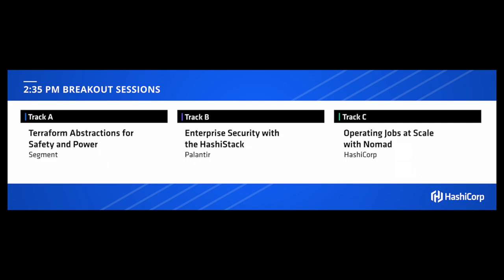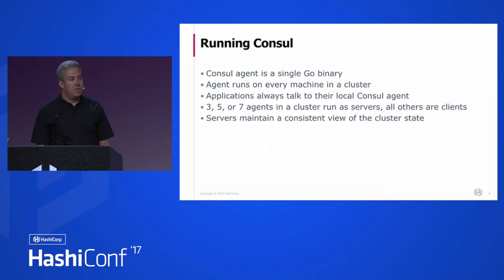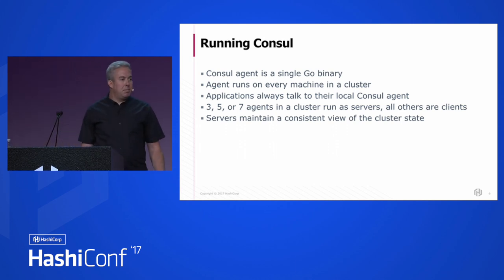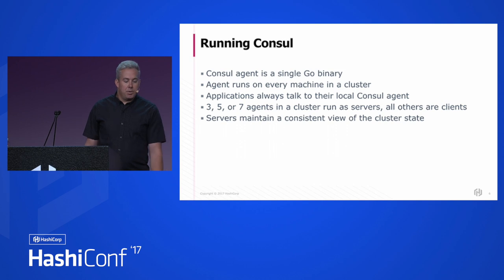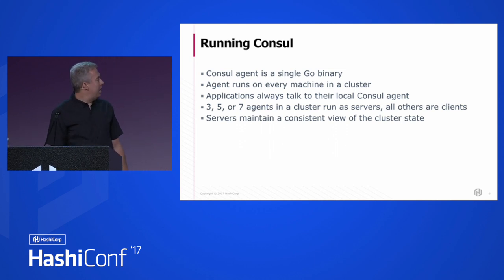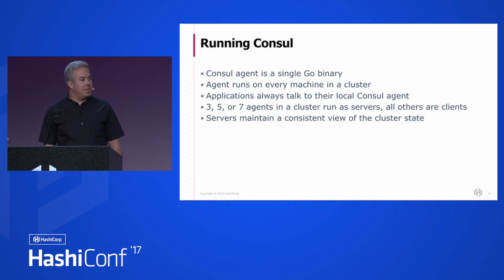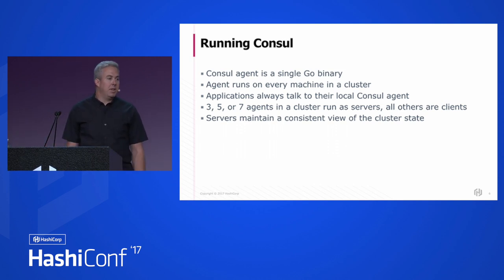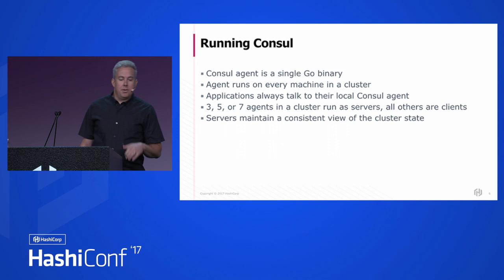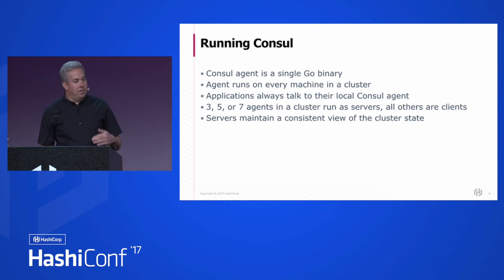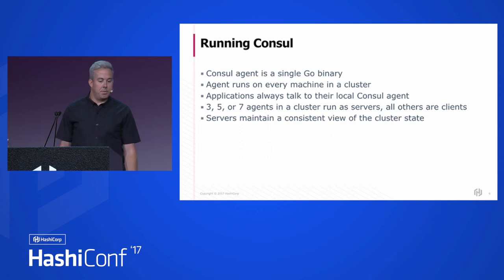You run the agent everywhere. You run a smaller set of agents — usually three or five — on a separate set of machines in server mode. Those keep some state for the cluster and have special roles, providing a consistent view. When you query console to find services, you're actually interacting with the servers, but that's hidden under the hood by how the agent provides an interface that masks all the details of the actual console cluster from you.